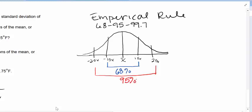95% of your data points should fall within two standard deviations of the mean. Now, if we go out three standard deviations, 99.7% of your data points should fall within three standard deviations of the mean.